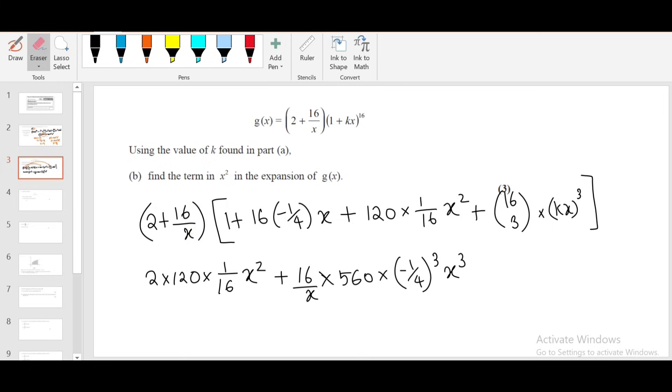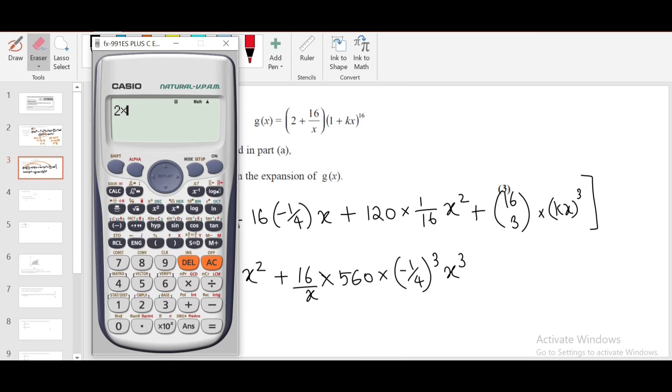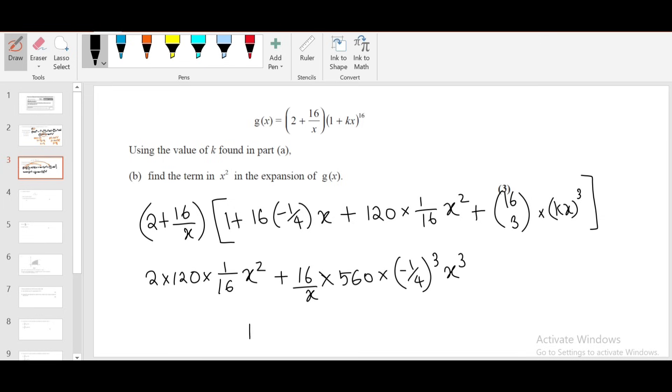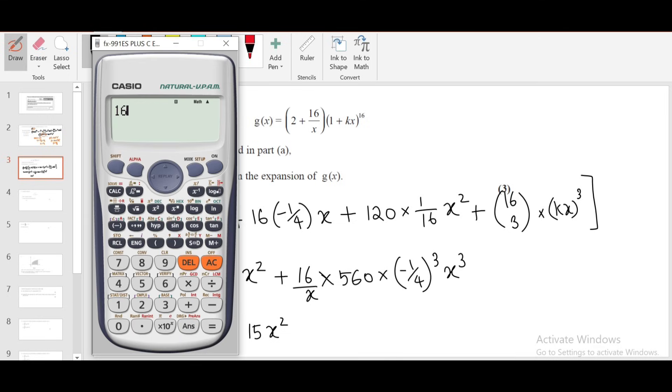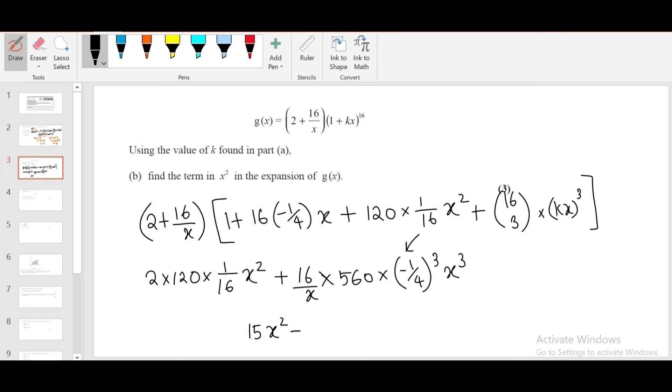The first term is 2 × 120 × (1/16)x² = 15x². The second term is 16 × 560 × (1/64)x² = 140x², but since k is negative, it's -140x². So 15 - 140 = -125x². That's the answer.